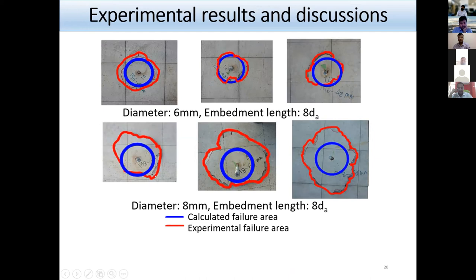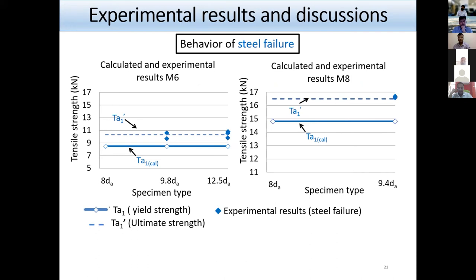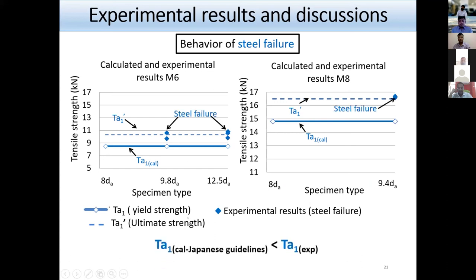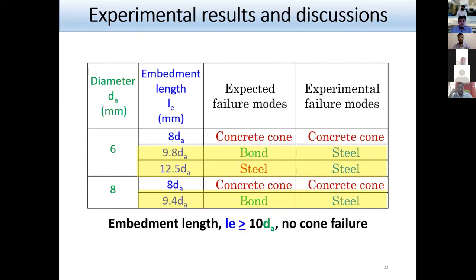This shows that the Japanese guideline evaluated the tensile capacity of the post-installed bonded anchor in low-strength concrete conservatively, which is why the CNCRP BSPP manual can be used for this type of design. For steel failure, specimens that failed in steel fracture reached their ultimate strength beyond yielding, also confirming conservative evaluation. Another important finding is that keeping the effective embedment length greater than or equal to 10 times the anchor diameter can avoid brittle failure.